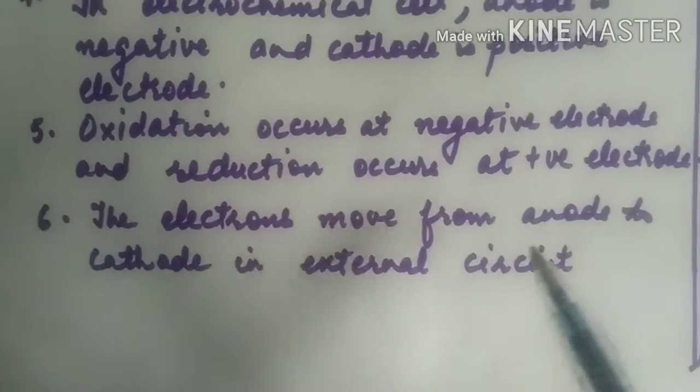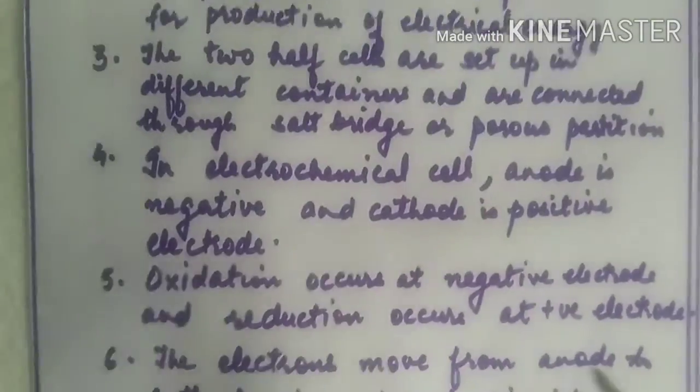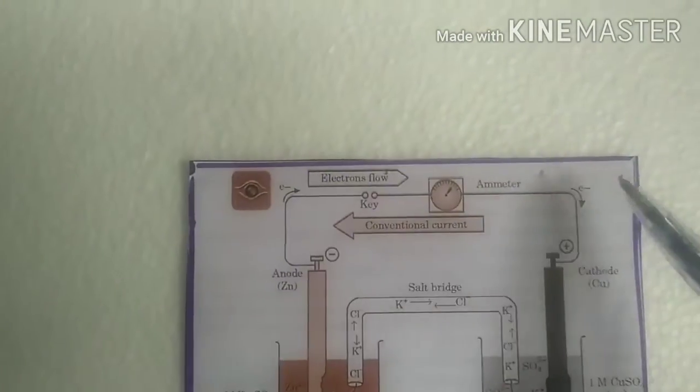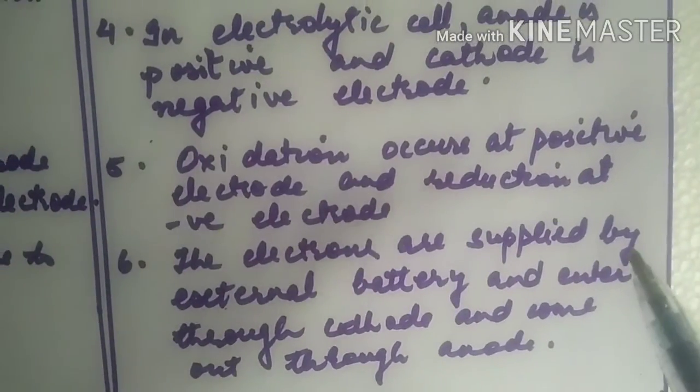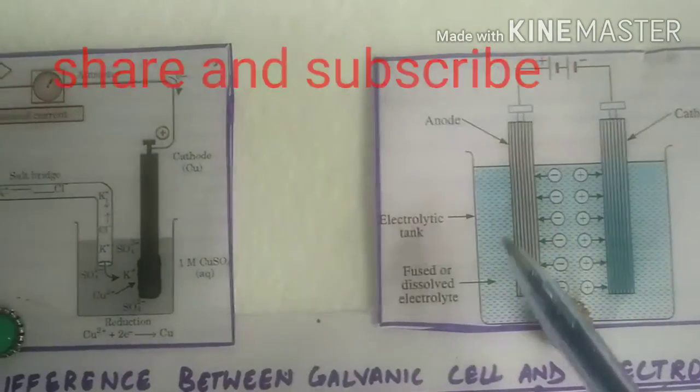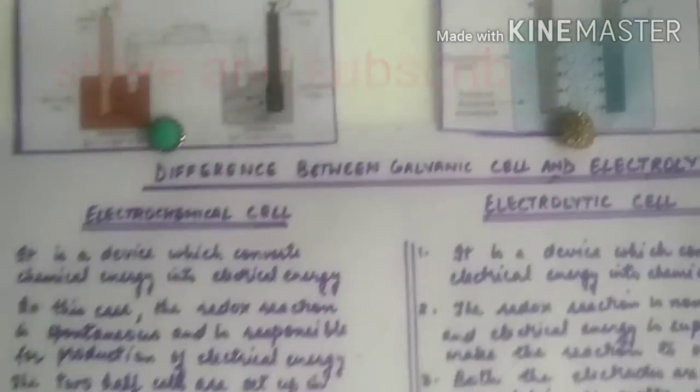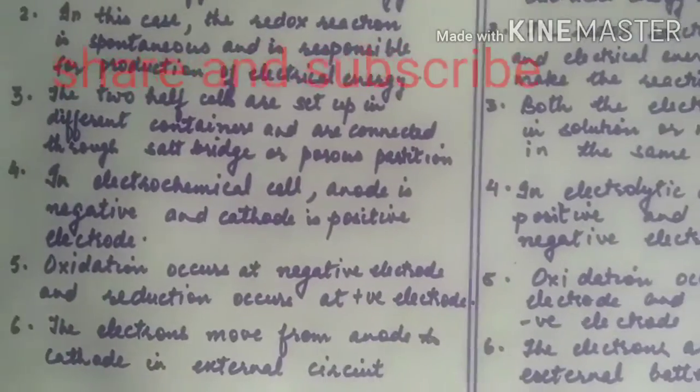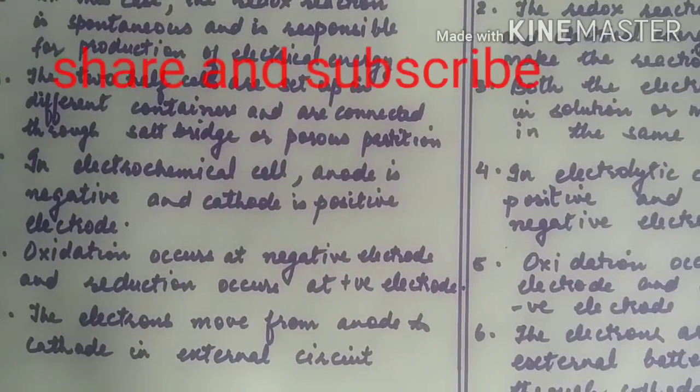The electrons move from anode to cathode in external circuit. The electrons are supplied by the external battery and enter through cathode and leave through anode. So this is the difference between electrochemical cell and electrolytic cell.